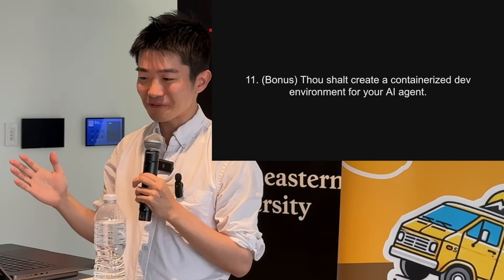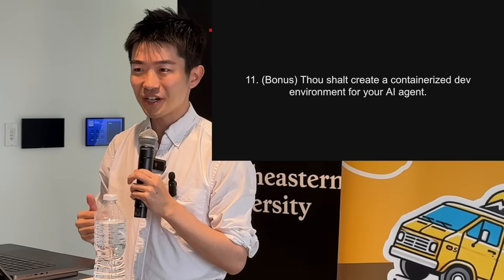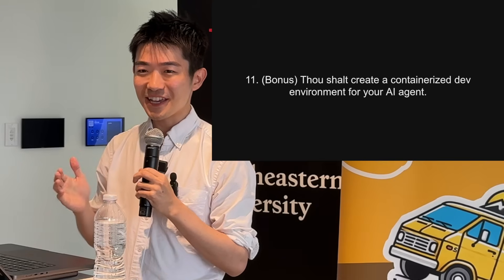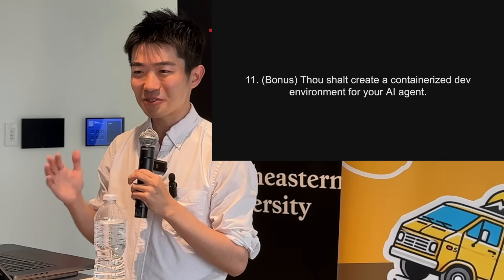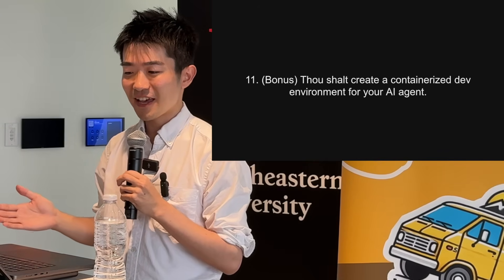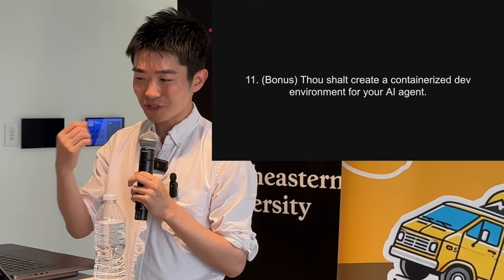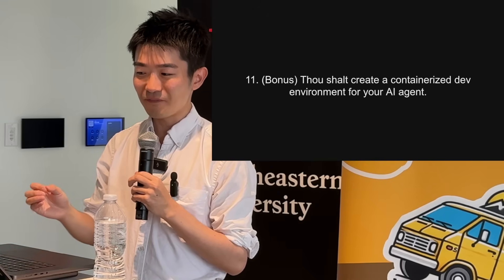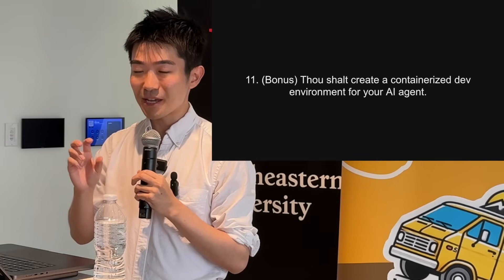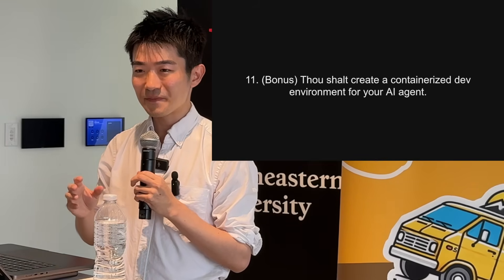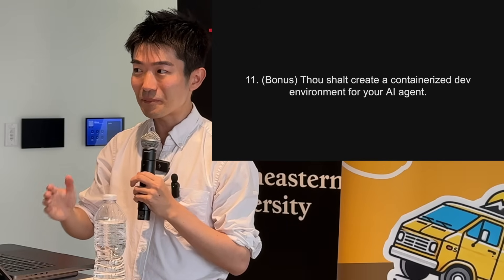Number eleven, a bonus one: you don't have to do this right now, but I think this is where the future is going — you don't want to just run one AI agent at a time. You want to run maybe 10, 100, or 1,000 at a time. The only way to scale that is to provide either a containerized dev environment or a VM-based dev environment for your AI agent, so it's able to not just write code but also test it, and maybe test the UI through computer use capabilities.